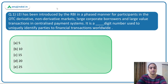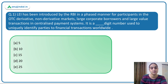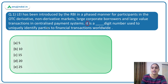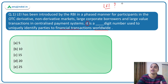Moving on to the first question: LEI has been introduced by RBI in a phased manner for participants in the OTC derivatives market, non-derivative markets, large corporate borrowers, and large value transactions in centralized payment systems. LEI is a dash-digit number to uniquely identify the parties to financial transactions worldwide. Let's first understand what LEI is, what it stands for, and what RBI has to do with it.